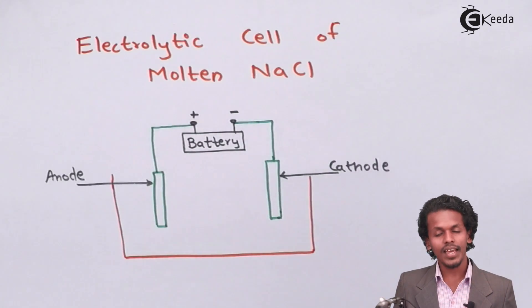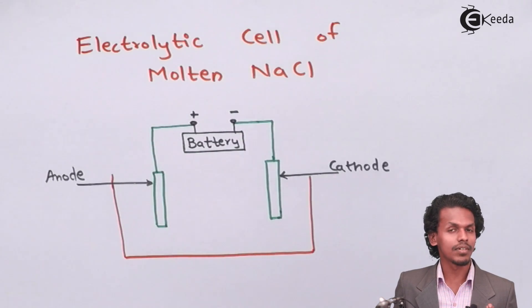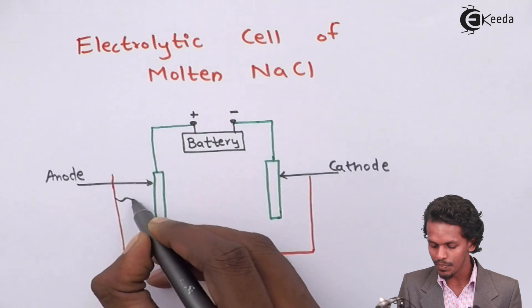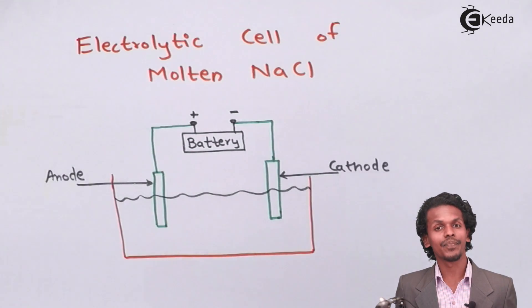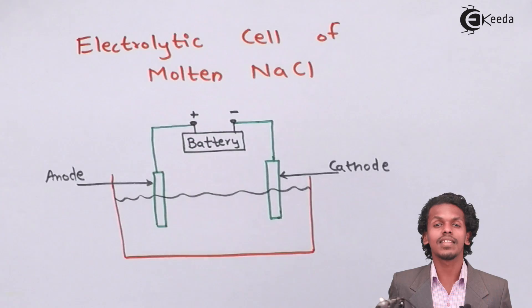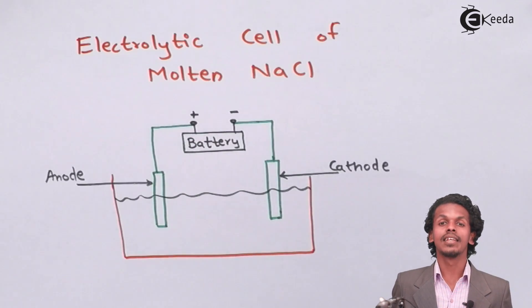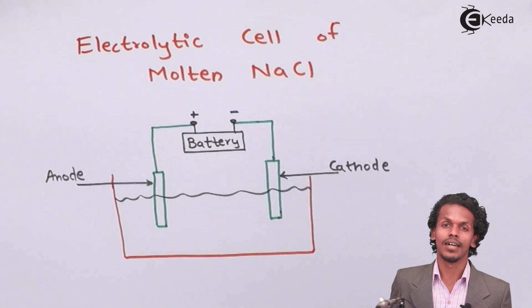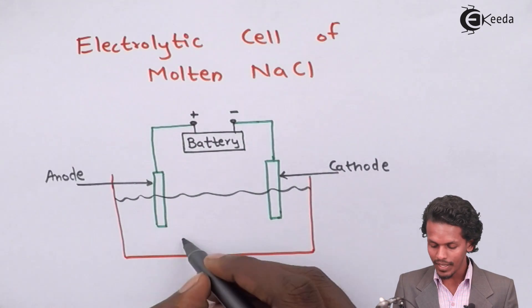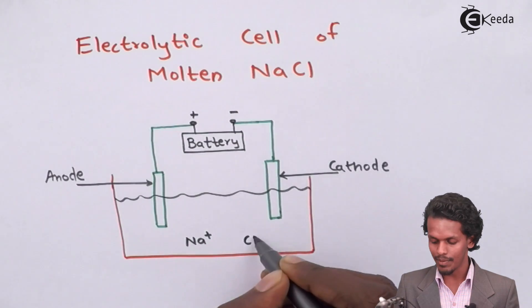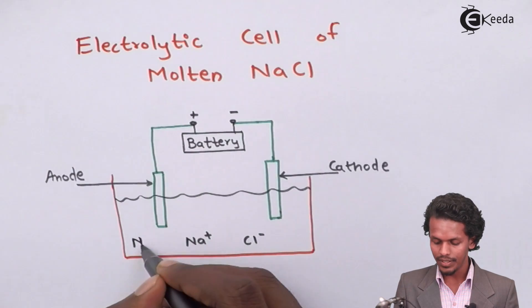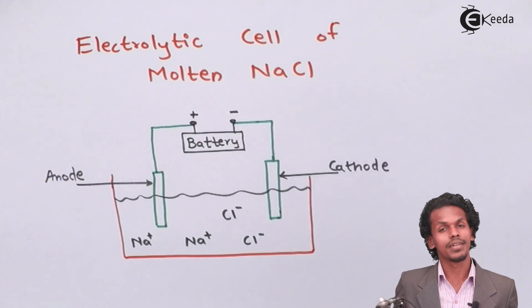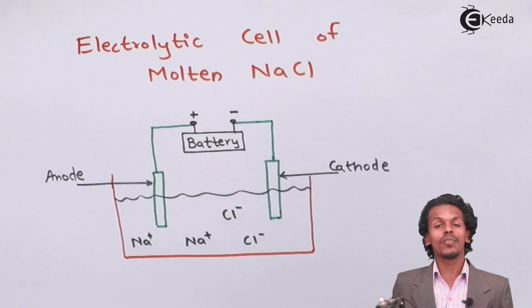Since we are estimating the electrolytic cell of molten NaCl, there is molten NaCl present in this cell. Since it is NaCl which is highly dissociable when it comes to an aqueous solution or molten solution, there will be possibility of Na+ and Cl- all over the solution.